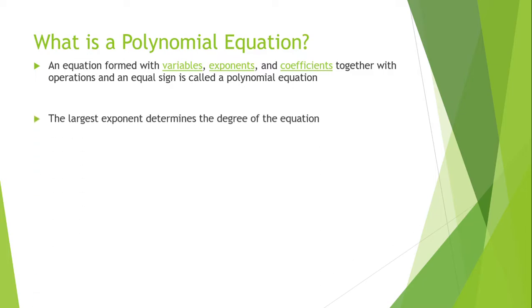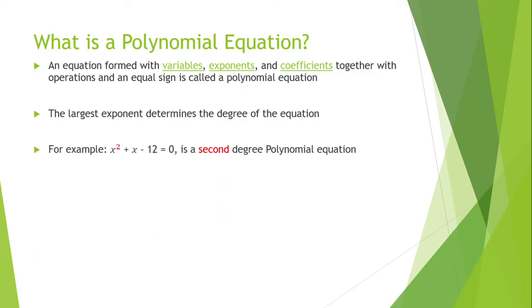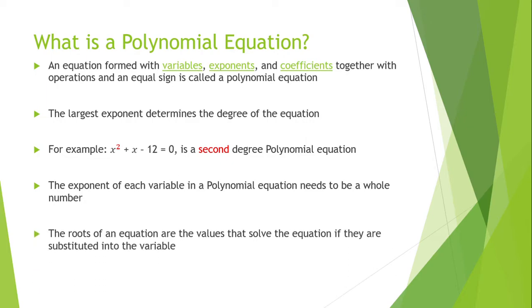The largest exponent determines the degree of the equation. For example, x squared plus x minus 12 equals 0 is a second degree polynomial equation. The exponent of each variable in a polynomial equation needs to be a whole number. The roots of an equation are the values that solve the equation if they are substituted into the variable. Finding the roots of a polynomial is sometimes called solving the polynomial.